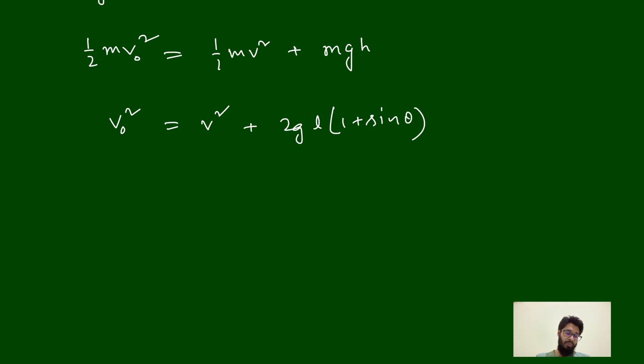v0 square is equal to v square plus 2gL plus 2gL sin theta.